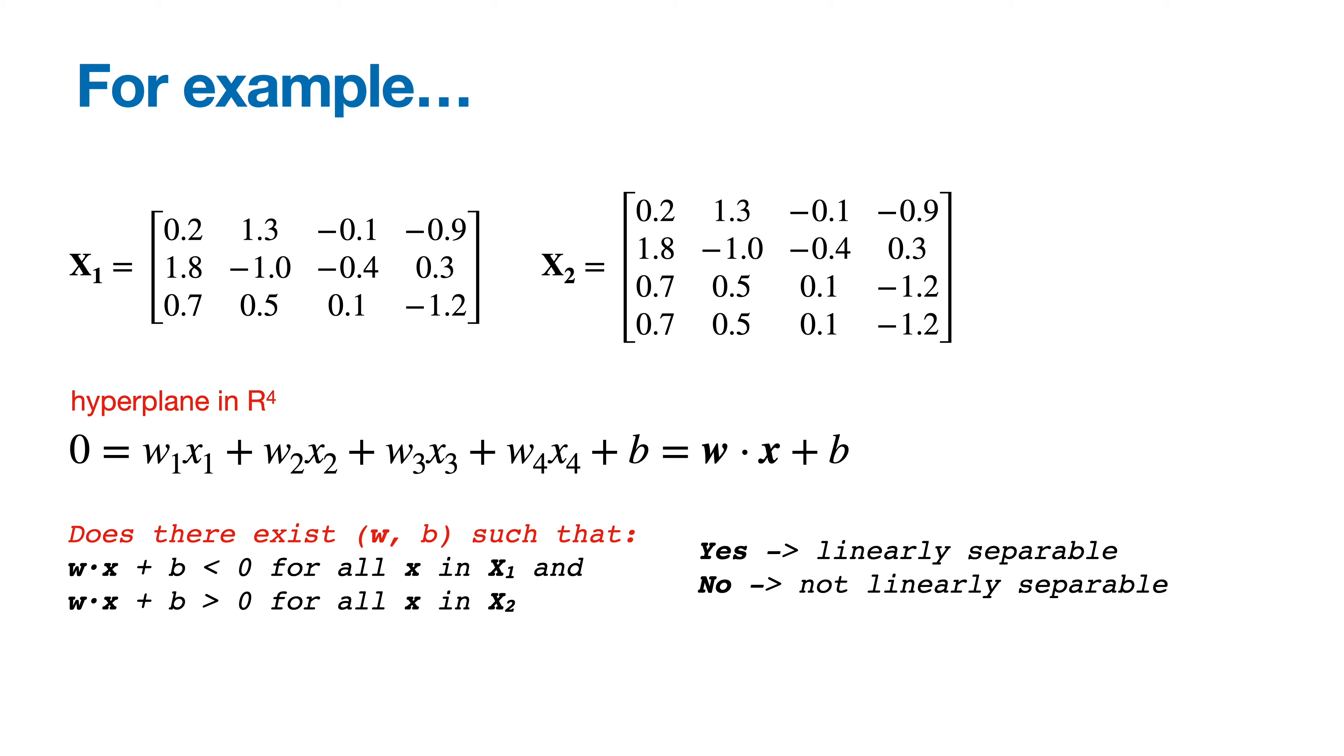This brings up another fascinating question. Given a random data set with two classes, how do you figure out if it's linearly separable? We'll circle back to answer that question, but in the meantime, let's assume that every data set we're going to work with is linearly separable.